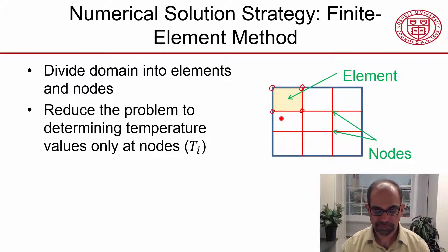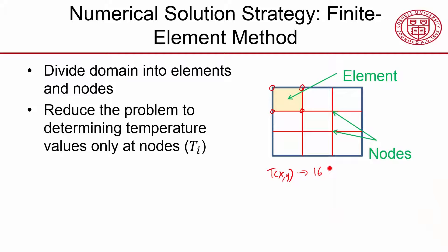Then we reduce the problem to determining temperature only at the nodes. Here I have 16 nodes - four rows of these - so I have 16 nodes. I'm going from determining temperature everywhere, needing to determine a two-dimensional function, to determining 16 temperature values. That's a big simplification, and that's the advantage of discretization.